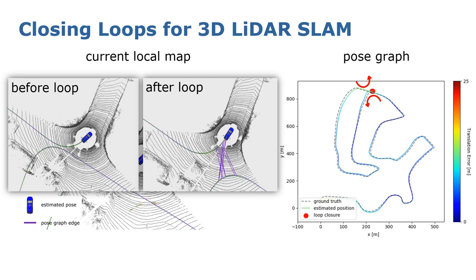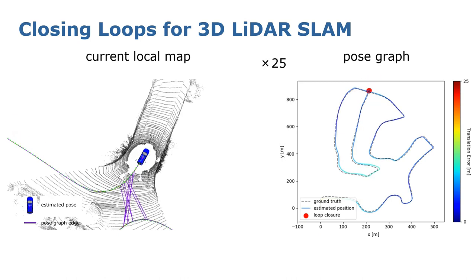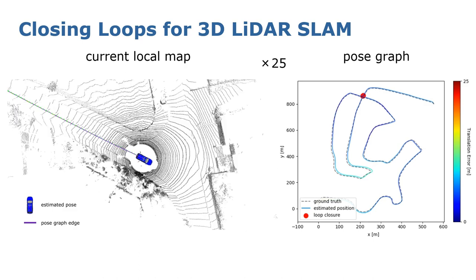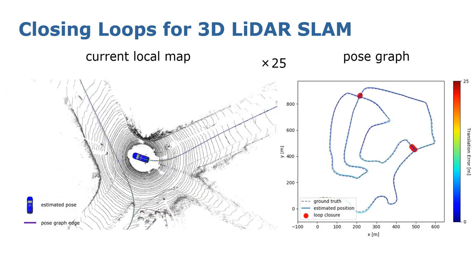Here it shows that our approach can also find loop closures in the challenging situation where the car comes back into an intersection from the opposite direction.